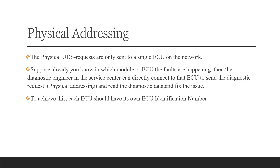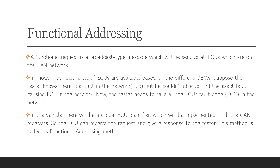Functional addressing is a broadcast type message which will be sent to all the ECUs on a CAN network. In modern vehicles, many ECUs are available depending on different OEMs. If the tester knows there is a fault in the network bus but cannot find the exact fault-causing ECU, the tester needs to talk to all ECUs to find which one has the DTC fault code. A global ECU identifier — which is implemented in all CAN receivers — allows each ECU to receive the request and respond to the tester. This method is called functional addressing.